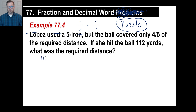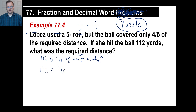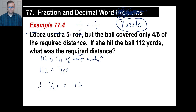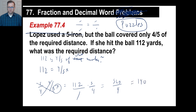Your sentence should be: 112 is four-fifths of some number x. Turn it into an algebraic equation: four-fifths x equals 112. To solve, multiply both sides by five-fourths. That gives x equals 112 times 5 over 4. 100 times 5 is 500, 12 times 5 is 60, so 560 divided by 4 equals 140. That's method one.